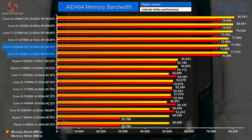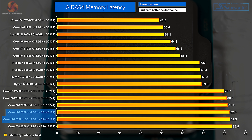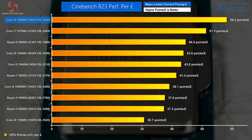AIDA64 memory bandwidth: the processors at the top with enormous bandwidth are all running DDR5. Among the DDR5 processors — the new Alder Lake chips — the Core i5 sits below Core i7 and Core i9, however it demolishes old Ryzen and previous-generation Intel processors. In AIDA64 memory latency we flip the position around: the new processors on DDR5 have notably high latency.